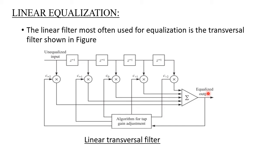Linear equalization is used to correctly receive the transmitted signal. When the transmitted signal passes through the communication channel, the channel adds additive white Gaussian noise. In order to remove that noise and recover our original signal, we use linear equalization. We will now see the peak distortion derivation.